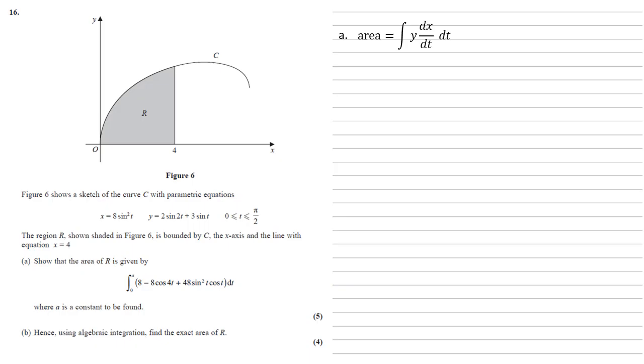So we need to find dx by dt. Since x is 8 sine squared t, differentiating using the chain rule, the power of 2 comes to the front to give us 16, it drops by 1 to give us sine t, then we multiply by the derivative of sine which is cos. So dx by dt equals 16 sine t cos t.